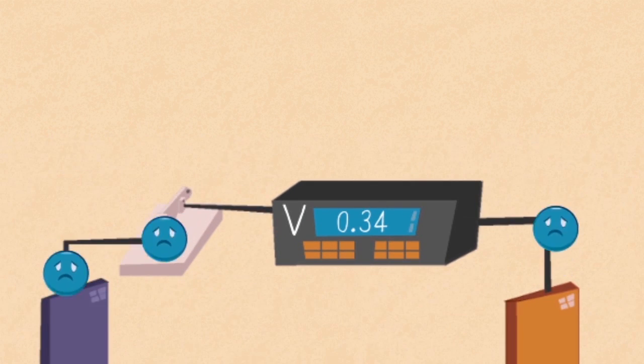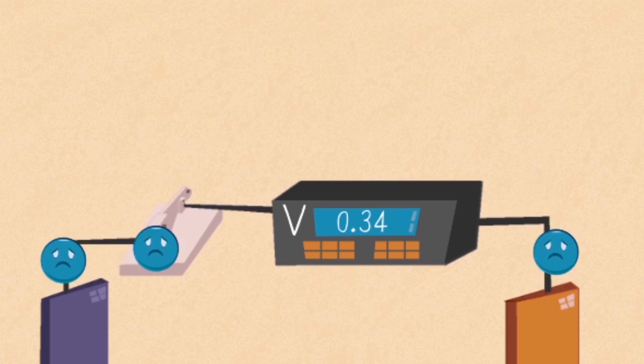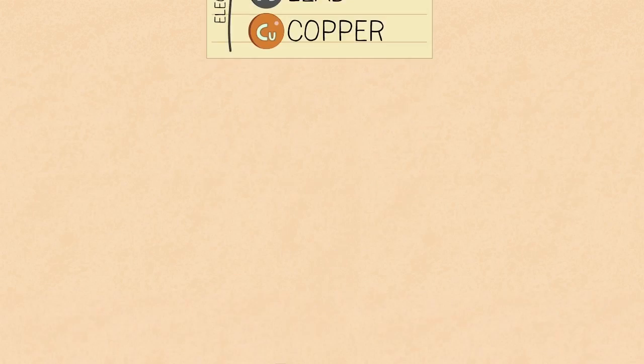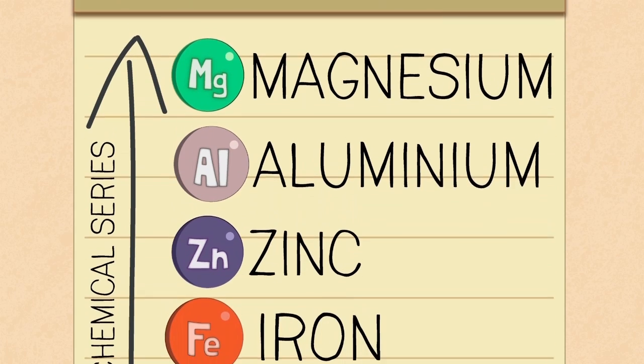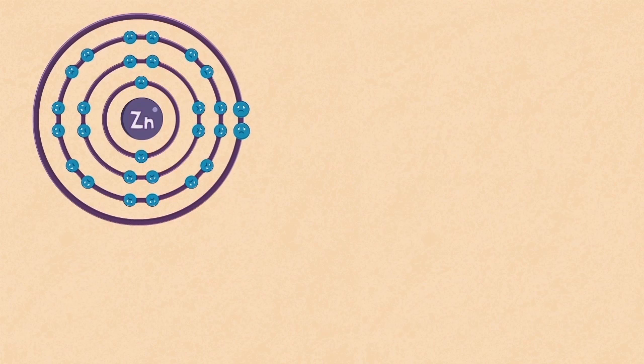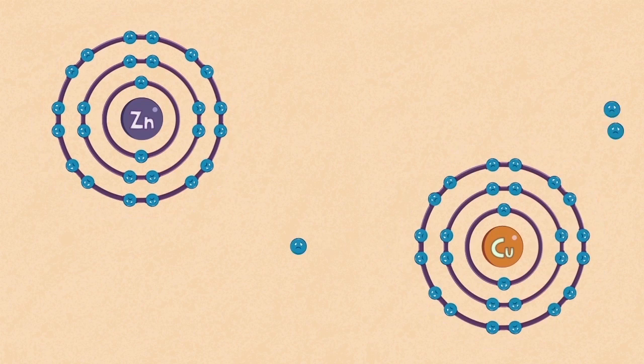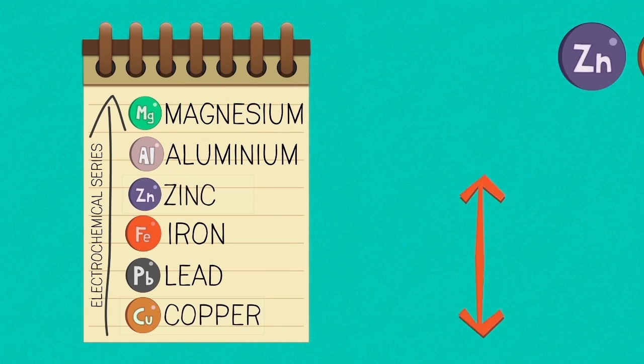The electrochemical series is a list of metals and other substances arranged in rank order of how easily the atoms may lose electrons. The further apart the metals are in the electrochemical series, the higher the voltage produced across the cell.